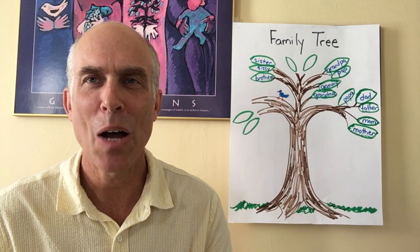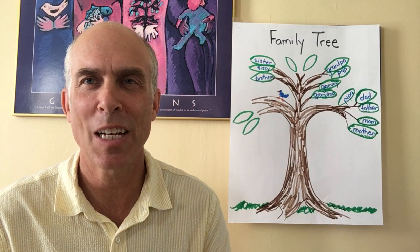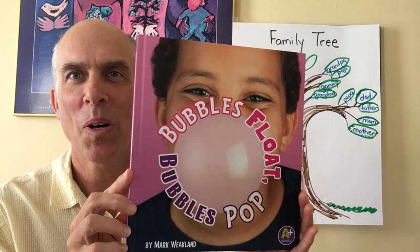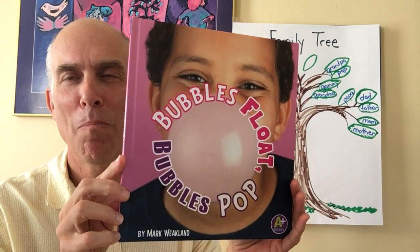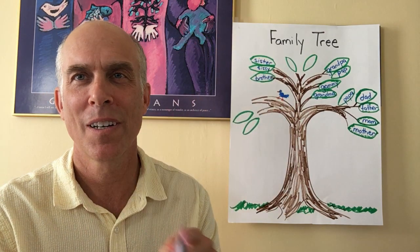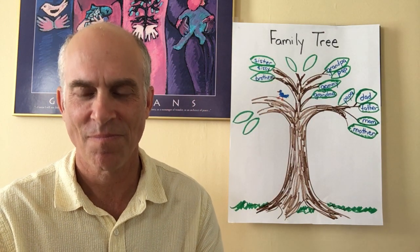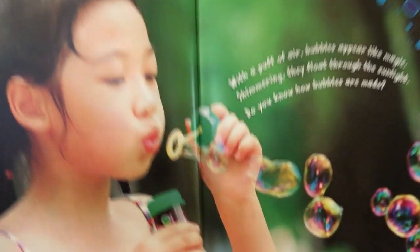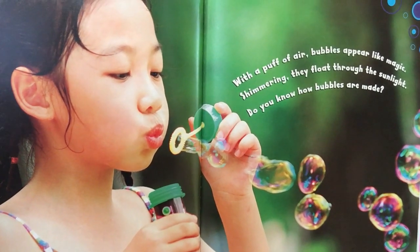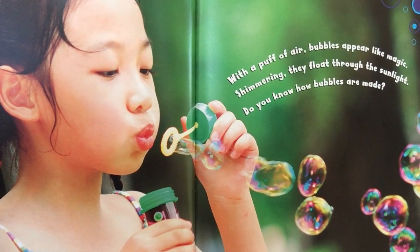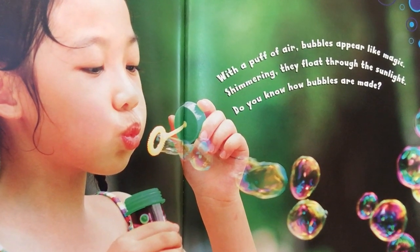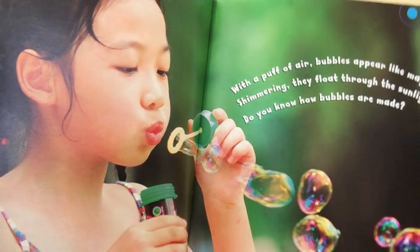Hello, I'm Mark Weekland and I'm going to read one of my books. The name of this book is Bubbles Float, Bubbles Pop by Mark Weekland. With a puff of air, bubbles appear like magic. Shimmering, they float through the sunlight. Do you know how bubbles are made?